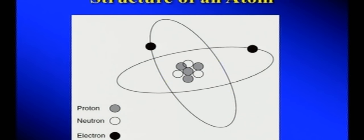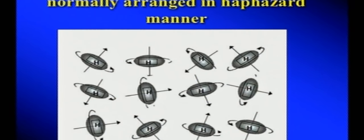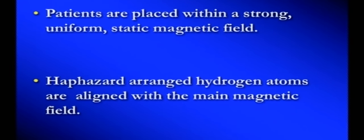In MRI basics, the nucleus of an atom contains protons (positive charge), neutrons (neutral), and orbiting electrons (negative charge) — all spinning around their own axes, generating a magnetic field. In the body, hydrogen is utilized because it is in water and 70% of body content is water. Hydrogen has a single proton, behaves like a dipole magnet, and has the highest magnetic susceptibility, but in tissue it is arranged haphazardly — so no signal can be generated.